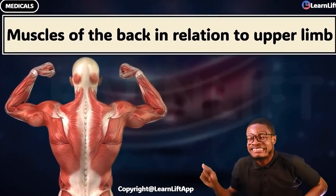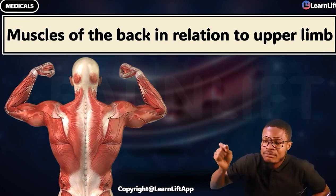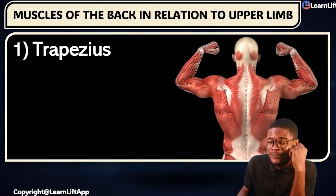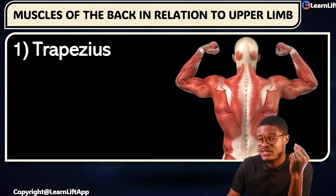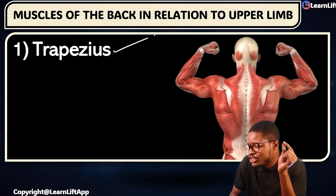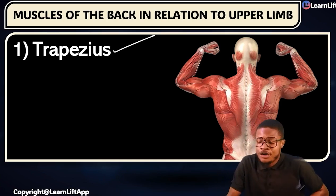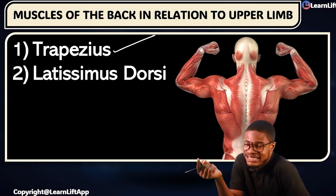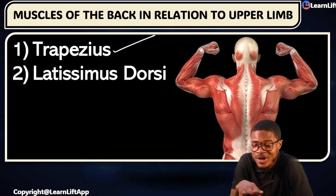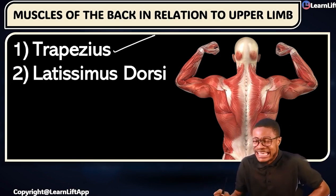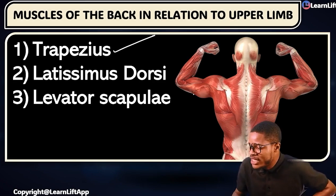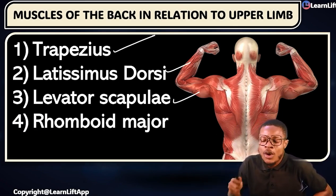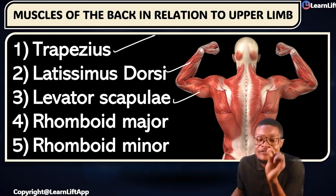The first group is the muscles of the back in relation to the upper limb. Number one is the trapezius. Number two is the latissimus dorsi — some people call it 'the lats' for short, but for now say the full name. Number three is the levator scapulae. Number four is the rhomboid major, and number five is the rhomboid minor.